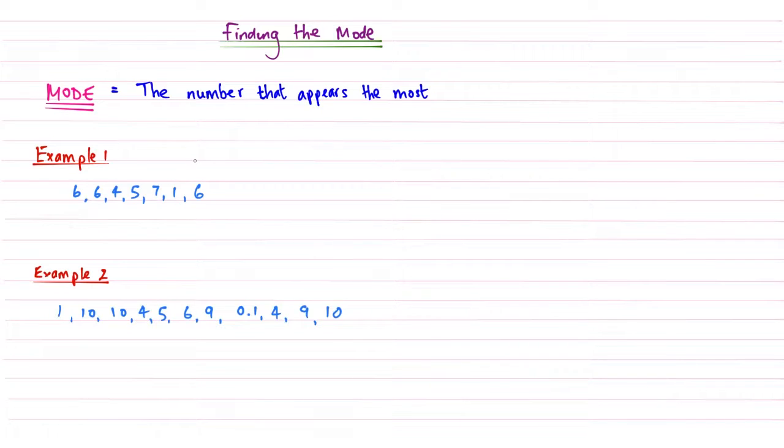Here I have two examples where I will explain how this works. If we look at example number one, the number that appears the most in this set of numbers is six because it occurs three times and all the others occur once. So it is fairly straightforward that the mode for example number one is going to be six because it occurs the most.